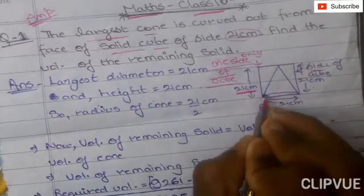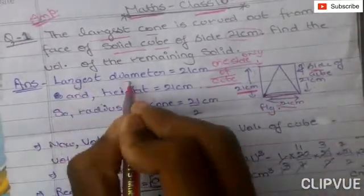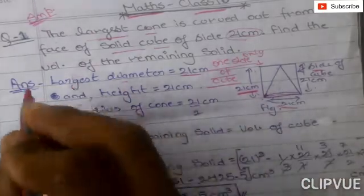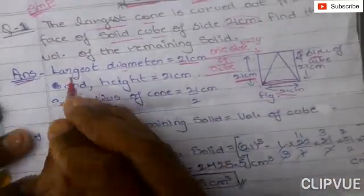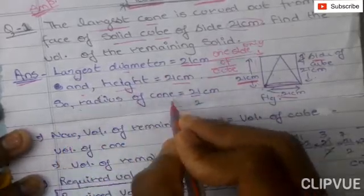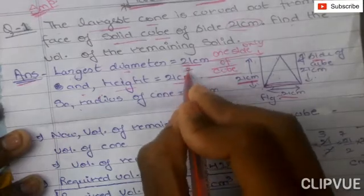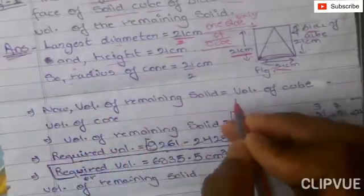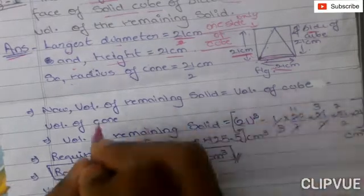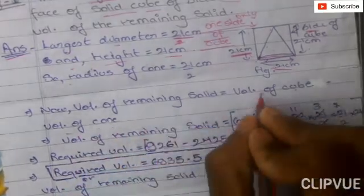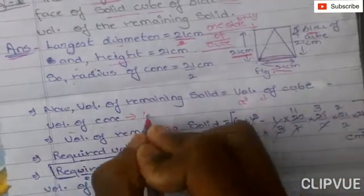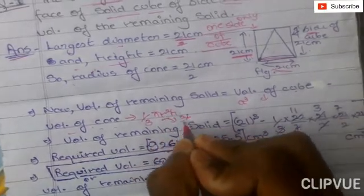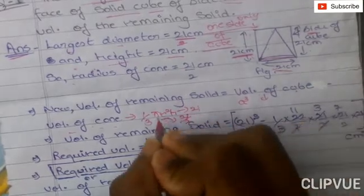We need to find the volume of the remaining solid. The largest cone has a diameter equal to the side of the cube, which is 21 cm. The height of the cone will also be equal to the side of the cube, which is 21 cm. So the radius is diameter divided by 2, which is 21 by 2.